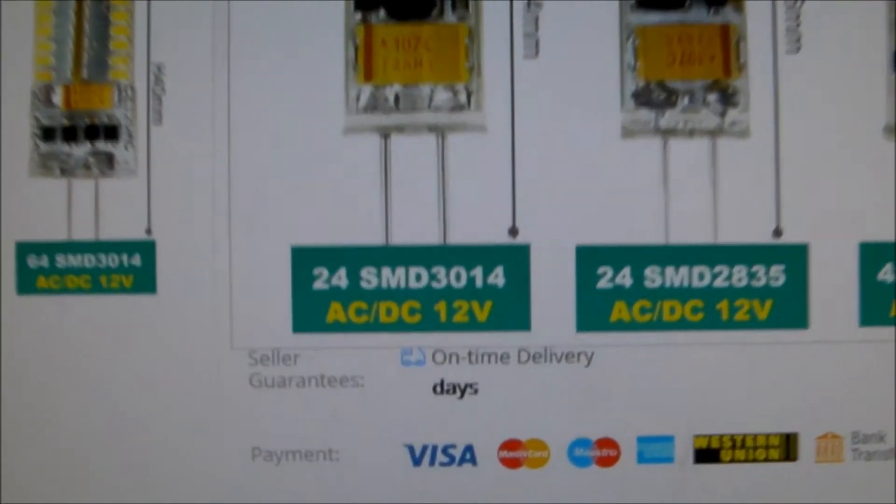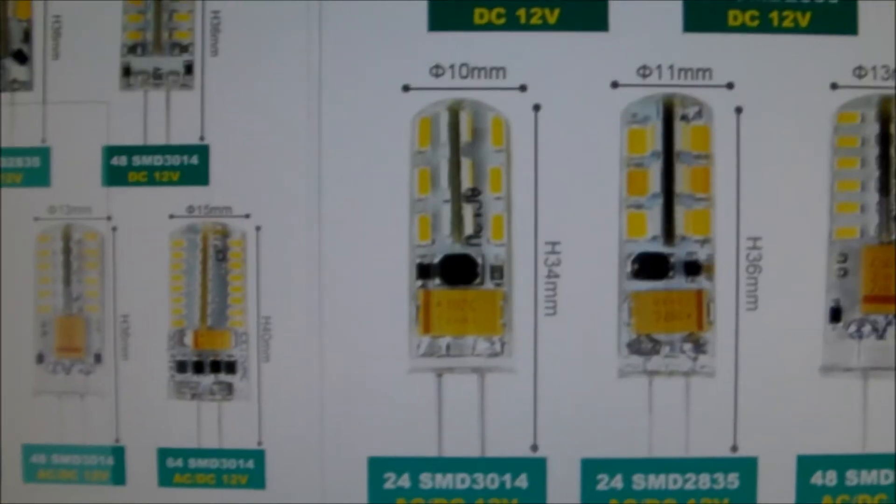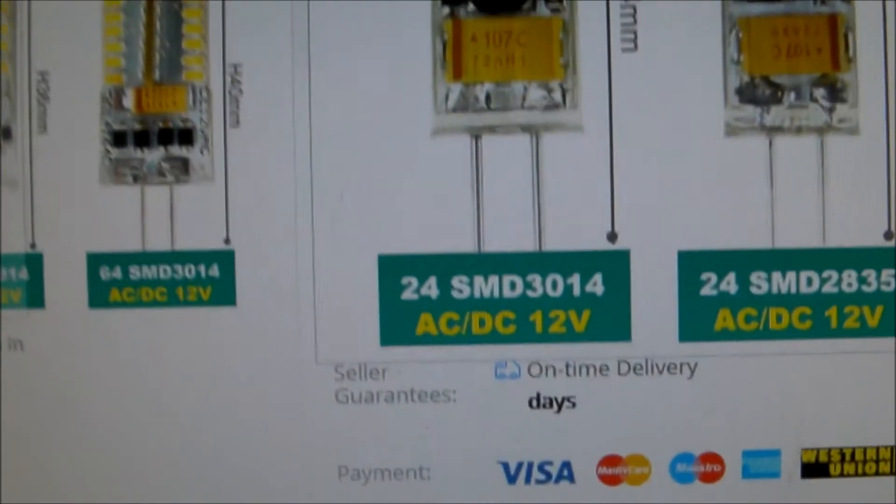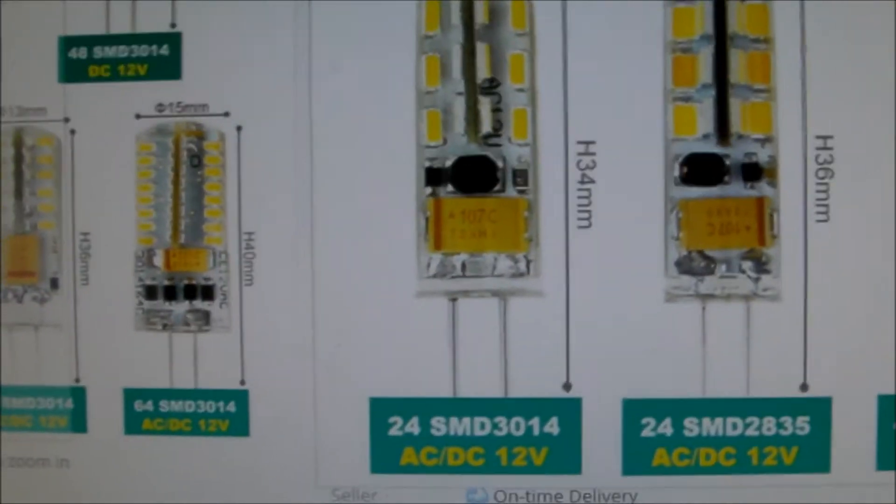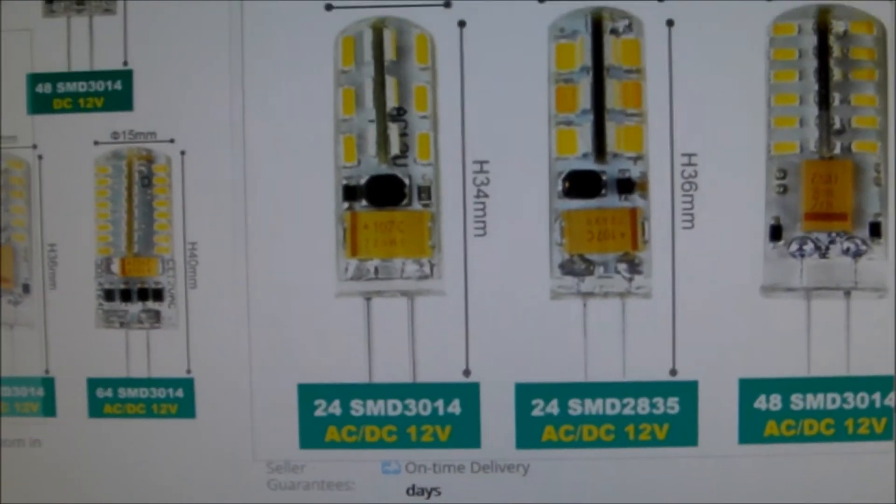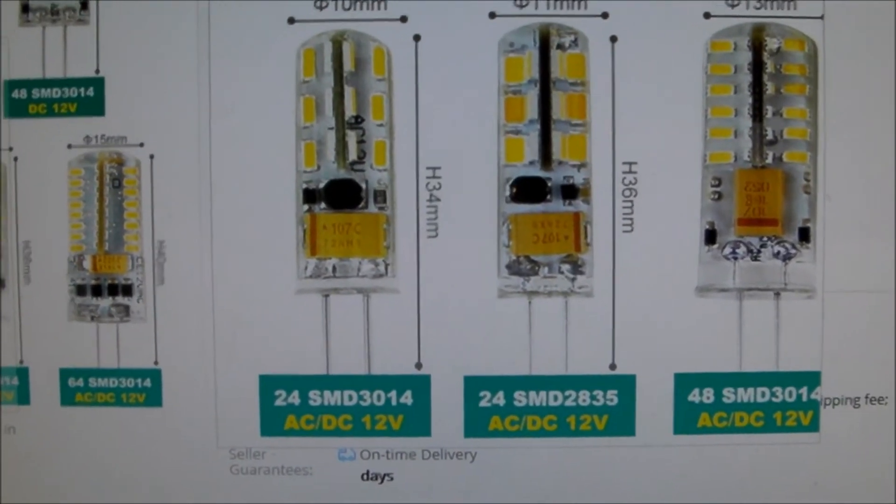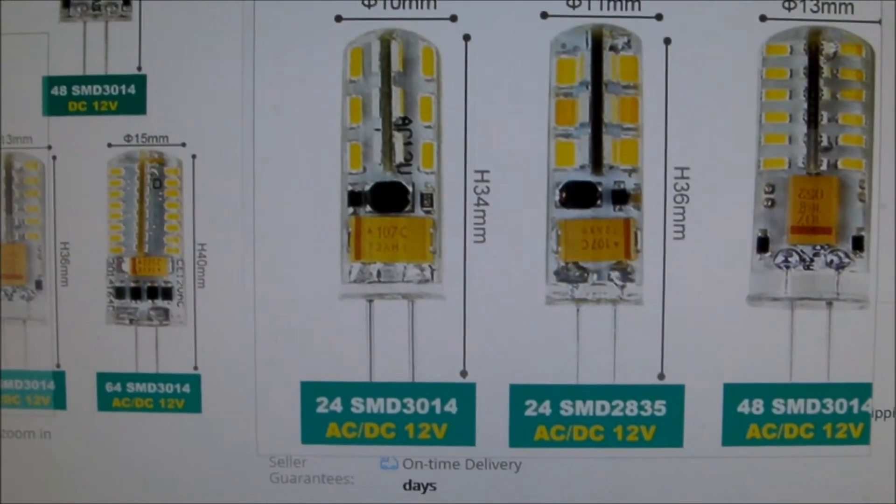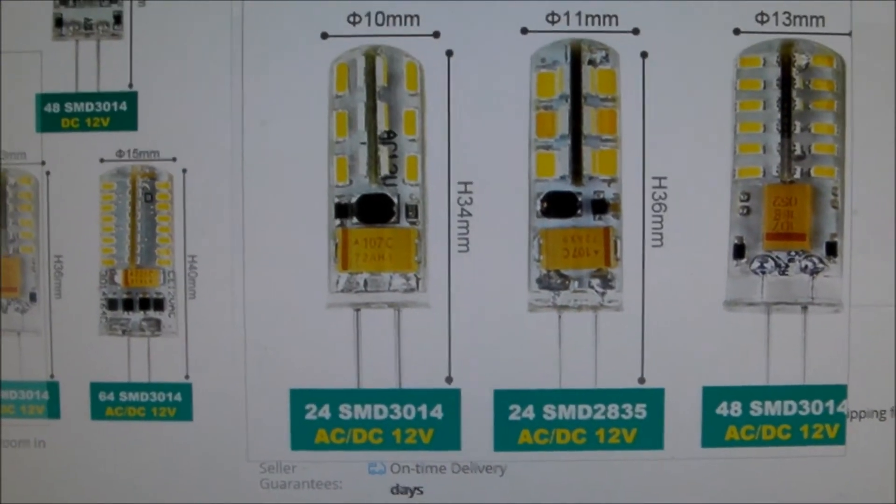The bulb I purchased was something like this bulb right here. It was a G4 bulb, but the important thing to pay attention to is the AC voltage rating. Not all LEDs are rated for AC, so this one had an AC or DC voltage rating of 12 volts. I paid 57 cents for it, that included shipping, maybe just under three weeks from Asia. I bought it on AliExpress for 57 cents delivered.